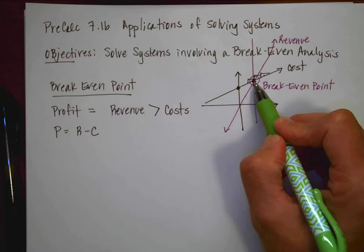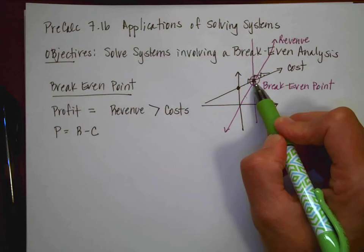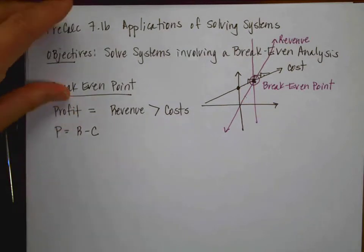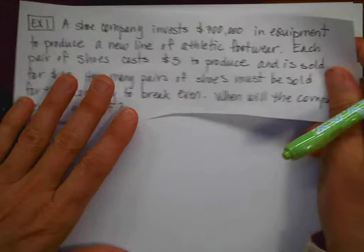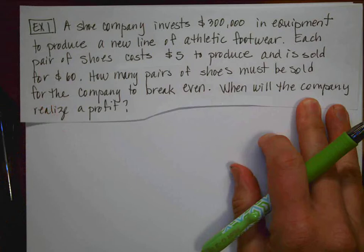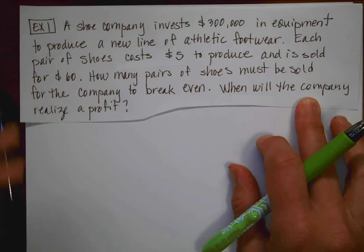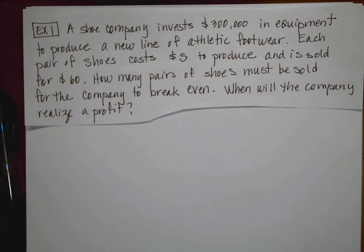And I have to decide where those two plans break-even and then which one is going to be better for me in the long run. So for the first example, I've gone ahead and written down the problem. This example says a shoe company is going to invest $300,000 in equipment to produce a new line of athletic footwear. Each pair of shoes costs $5 to produce and is sold for $60. How many pairs of shoes must be sold for the company to break-even and when will the company realize a profit?